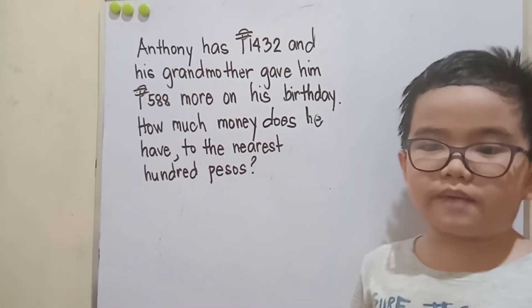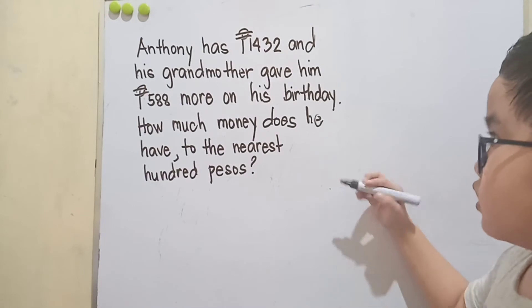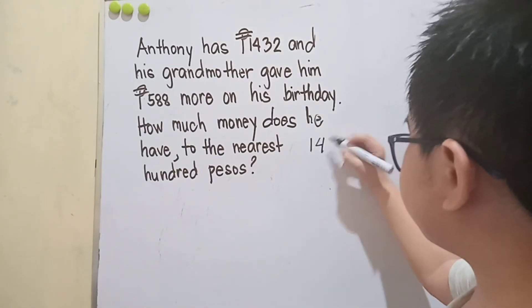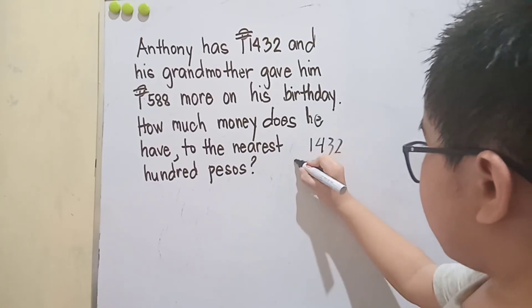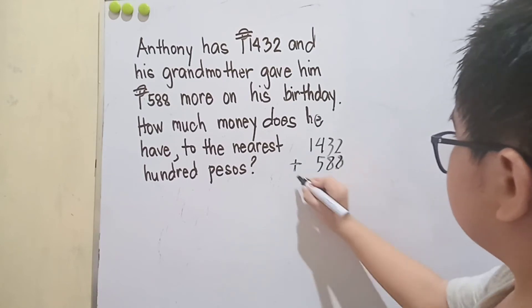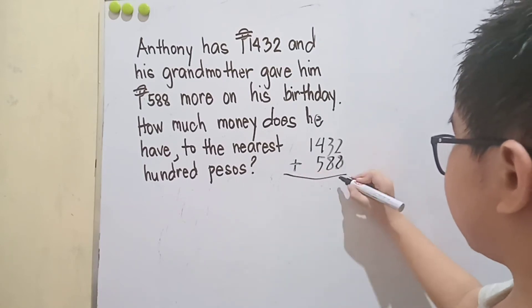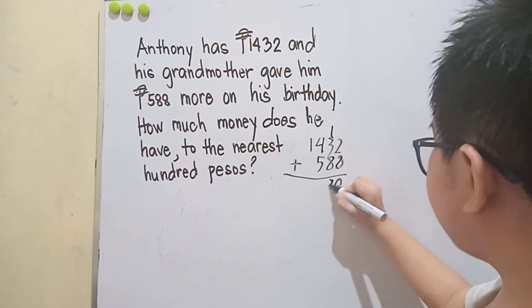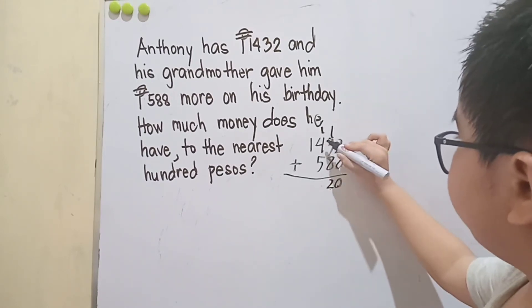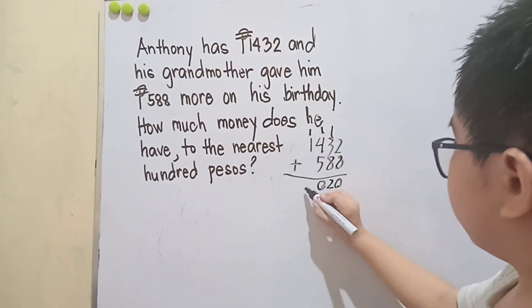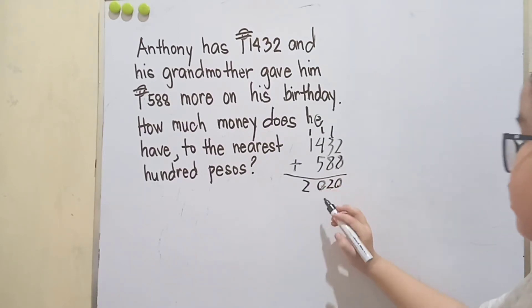To solve this problem, let us get the sum of 1,432 and 588. So we have 2 plus 8 is 10, 3 plus 8 is 11, plus 1 is 12, 4 plus 5 is 9, plus 1 is 10, 1 plus 1 is 2. So we have 2,020 pesos.